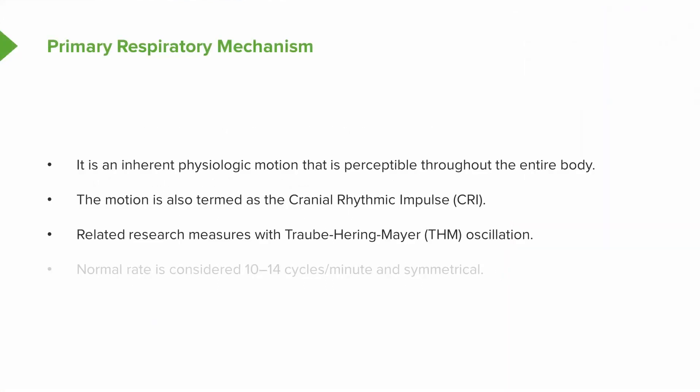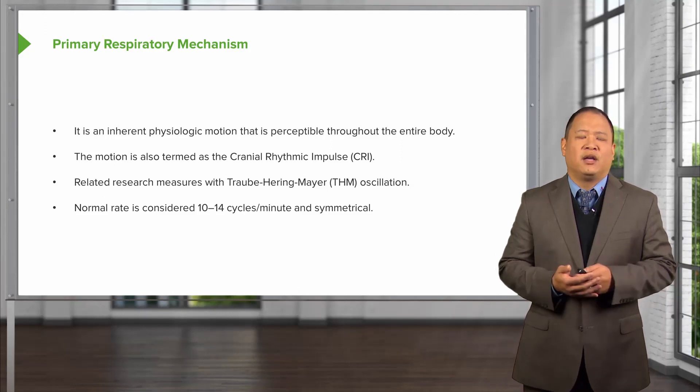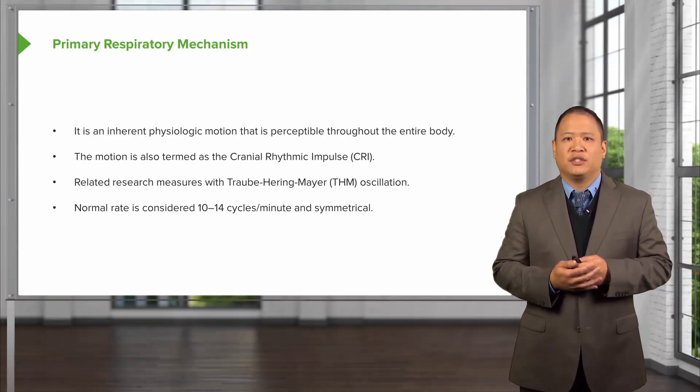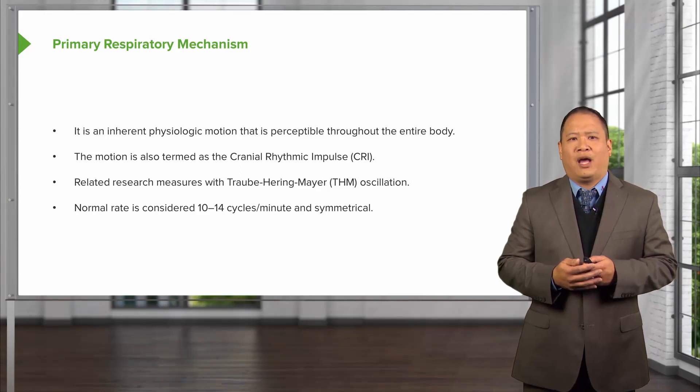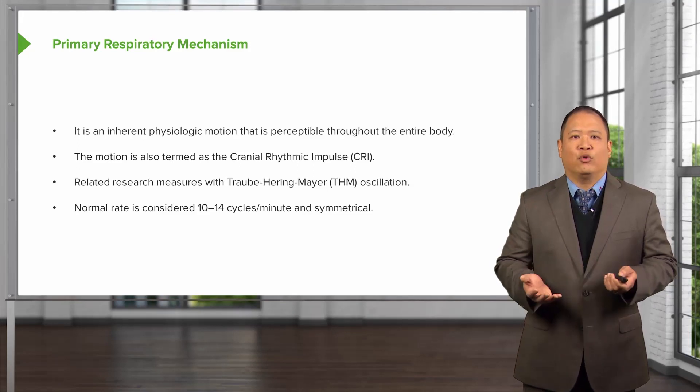There's been different research examining the cranial rhythmic impulse and associating it with Traub-Hering-Meyer oscillations. This has been studied using laser Doppler. What they found is a cycle of about 10 to 14 expansions and contractions per minute, which correlates with what is being palpated by cranial osteopathic physicians. If you have a rate below 10 or above 14, that is considered abnormal.